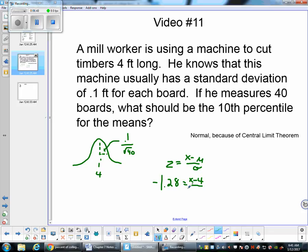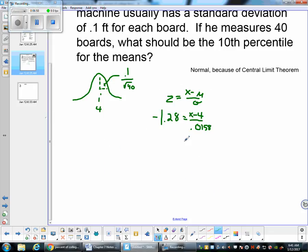And I get 0.0158. So now we multiply both sides by 0.0158, and I get negative 0.020 something, and then equals x minus 4.